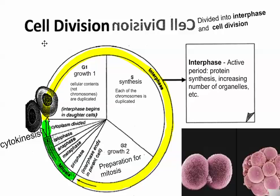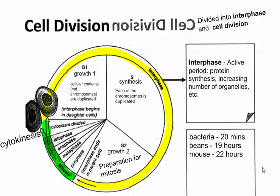So the sequence is G1, S, G2, the stages of mitosis, and then cytokinesis, ending with two cells. One cell turns into two, each one of those divides into four, then eight, then sixteen — multiplying by two each time. As a couple of random facts: bacteria divide in about 20 minutes, beans take about 19 hours, and mouse cells take approximately 22 hours.